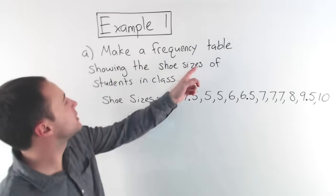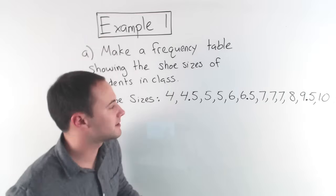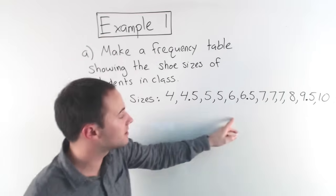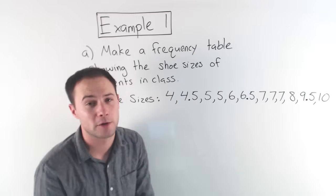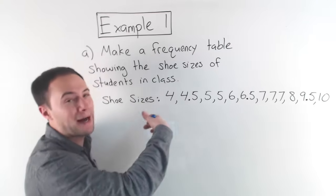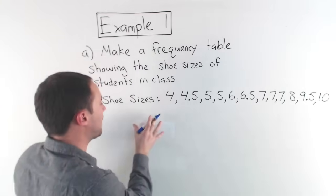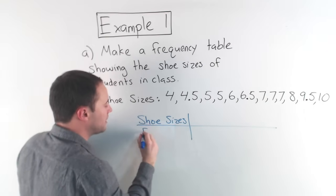Okay, here's example one. Make a frequency table showing the shoe sizes of the students in the class. So here's my data for their shoe sizes. It's already in order so that's very nice. So let's get started on the frequency table. Now a frequency table is very simple. It's just two rows. The top row is about your data, whatever your data is about. So in our case it's shoe sizes. On the bottom is always going to be frequency.